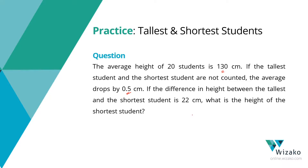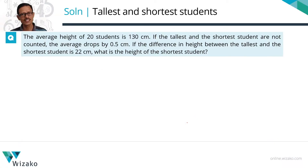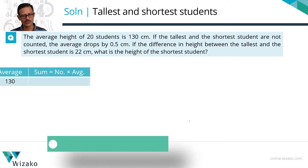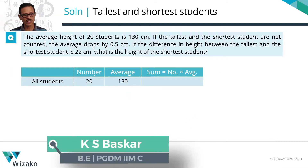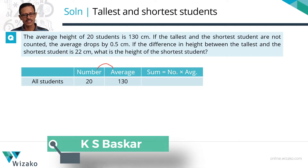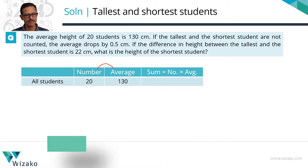Most of these averages questions can be fitted into the standard framework that we had discussed. The standard framework for averages comprises three columns: one is the number of elements, second is the average, and third is the sum. The sum is nothing but the product of the first and the second column — number of elements times the average gives us the sum.